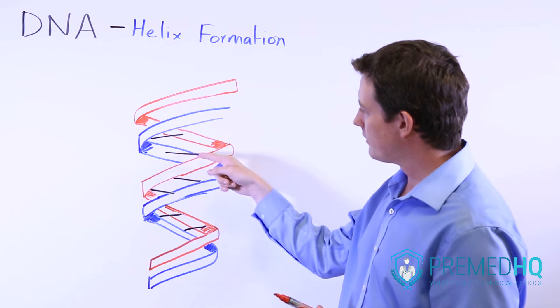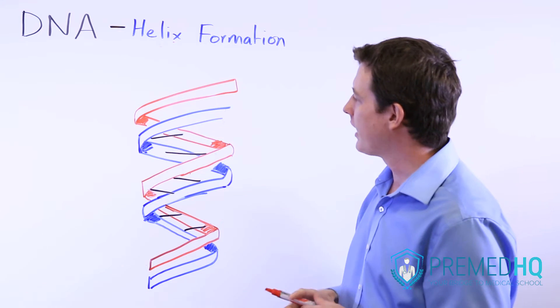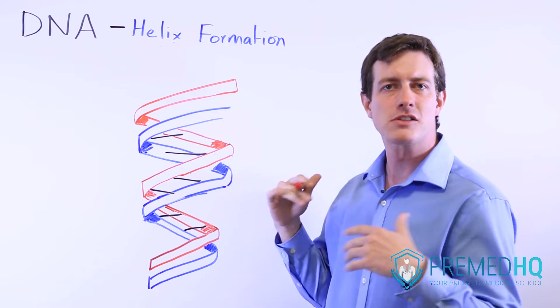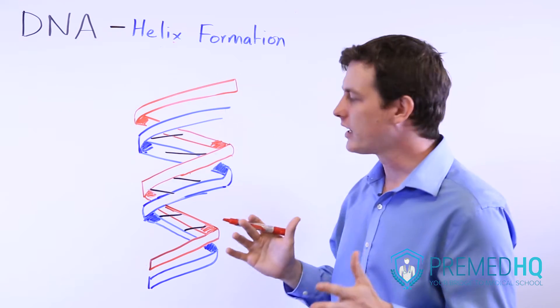Notice here that I've drawn a few black lines to represent these base pairs. And the bases face inward. This is known as the Watson-Crick model. It was also pioneered by Rosalind Franklin.